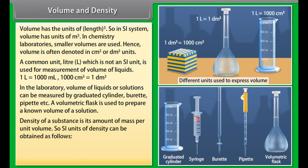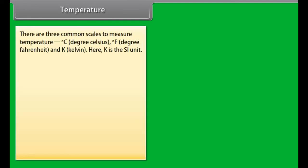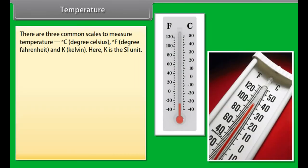Mass and Weight: Mass of a substance is the amount of matter present in it, while weight is the force exerted by gravity on an object. The mass of a substance is constant, whereas its weight may vary from one place to another due to change in gravity.